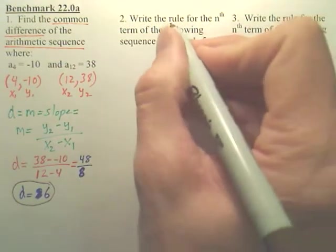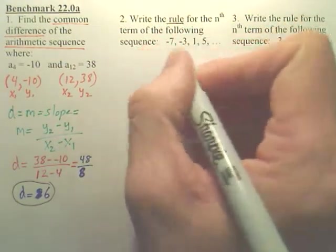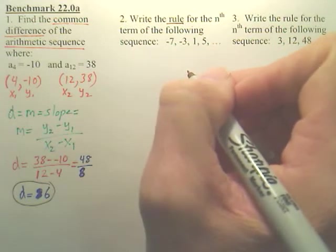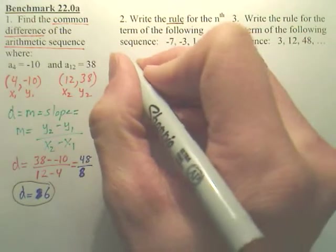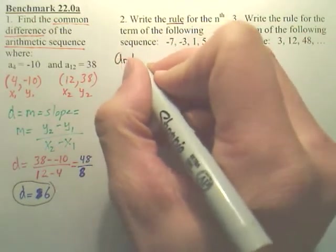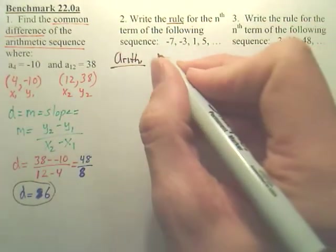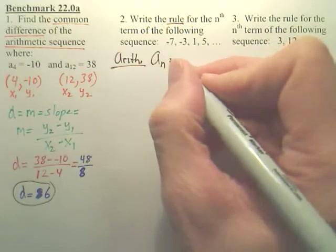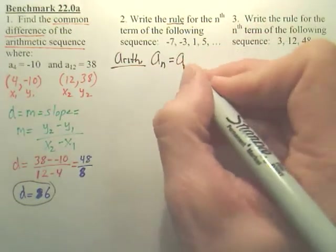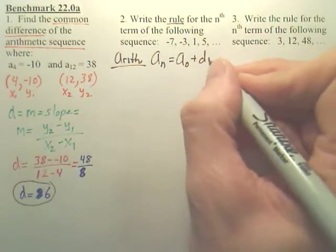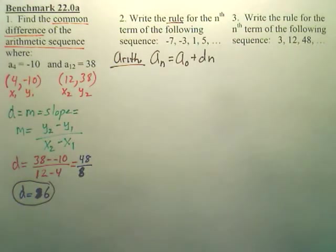Switch to number 2. We want the rule for this sequence. First of all, you've got to decide, is it geometric or arithmetic? And hopefully you notice this one's an arithmetic sequence. And the rule for any arithmetic sequence is A0 plus Dn. There's the rule for an arithmetic sequence.